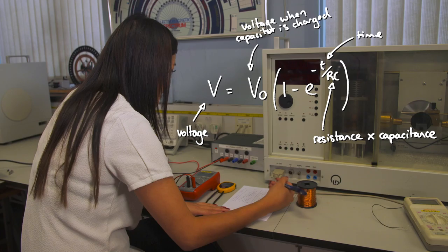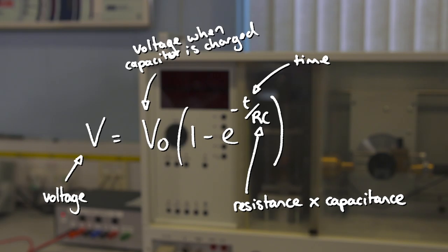where V is voltage, V0 is the voltage when the capacitor is fully charged, T is time, R is resistance and C is capacitance. Note the 1 minus exponential term because we start with an uncharged capacitor.